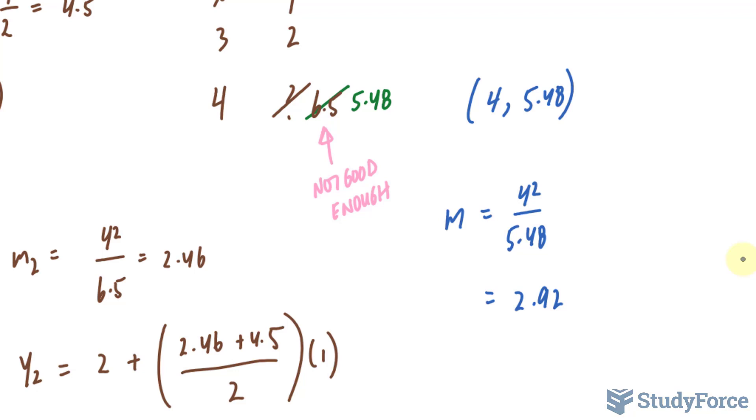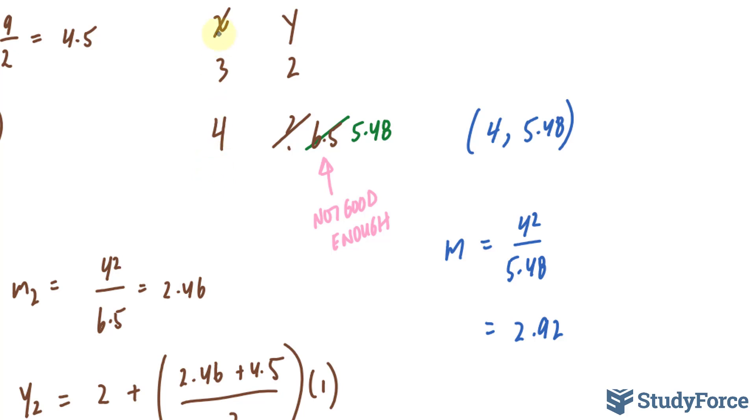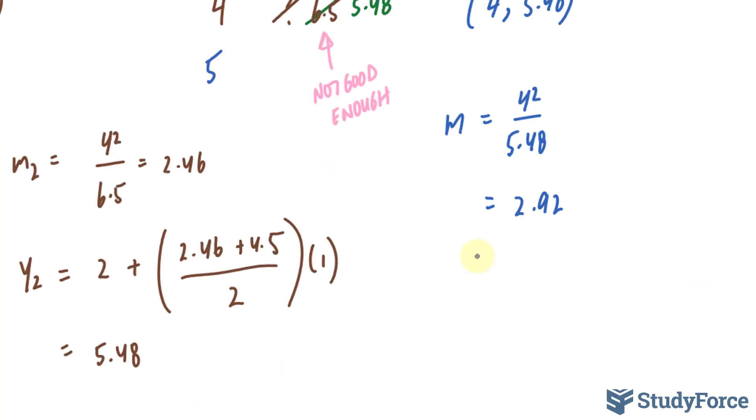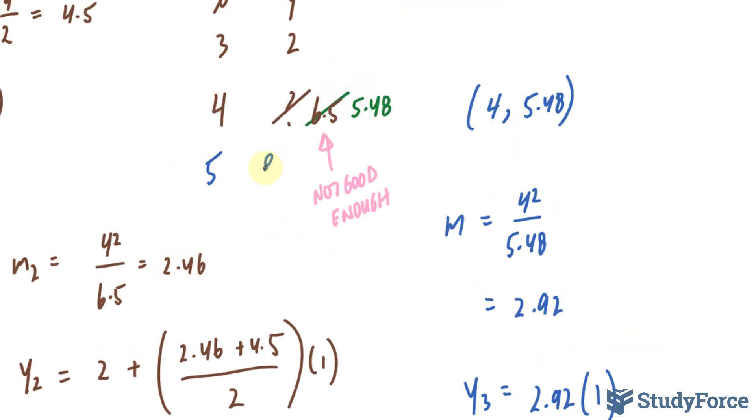We found the new slope, and with that we can find what the next coordinate will be. Our next point will be at x = 5. Let's find its y coordinate using the original Euler's method. We can do that by saying y₃ = 2.92 × 1, and add it to 5.48. 2.92 + 5.48 gives us our predicted y coordinate of roughly 8.4.